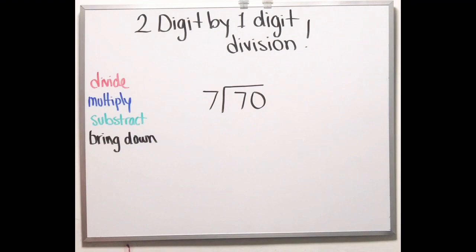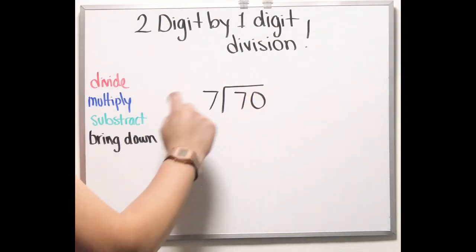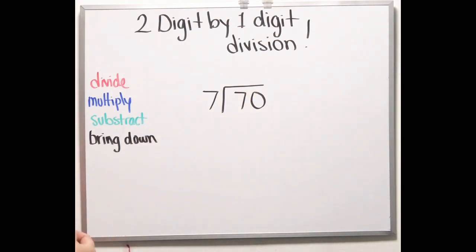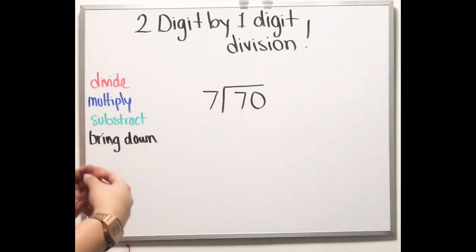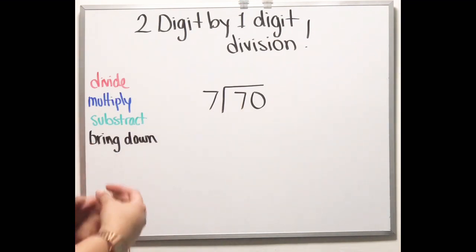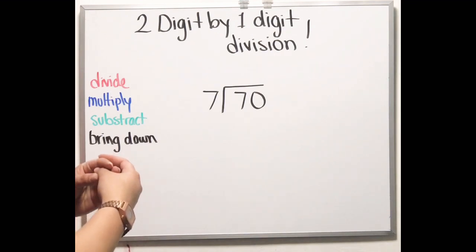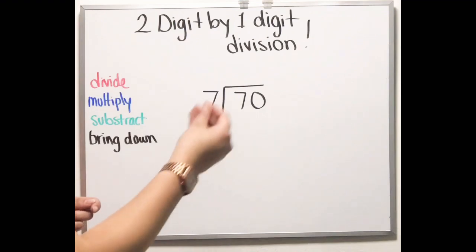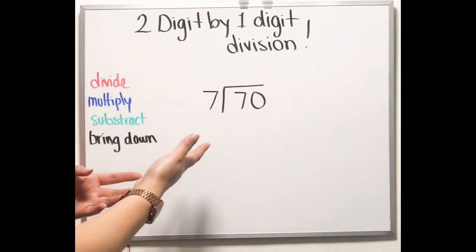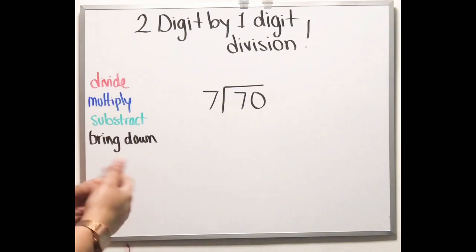Hello students, welcome to another video. For this video we're going to be doing division — we're going to work with two-digit by one-digit division. Division means to divide something into equal parts. For example, if you have a package of cookies and you want to give each of your friends the same amount of cookies, you will use division to give them equal amounts.